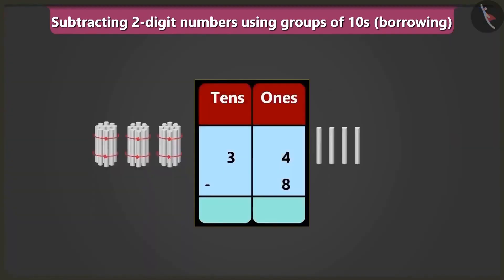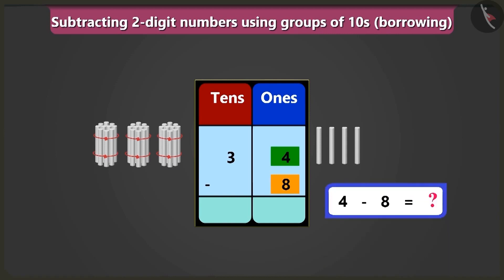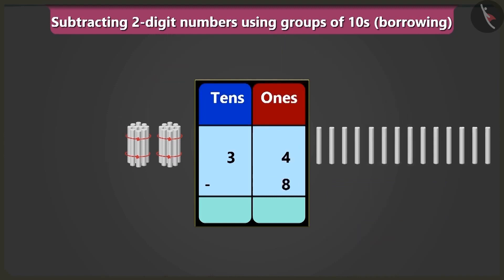To subtract 8 from 34, we write 34 and 8 in the box of ones and tens. 34 means 3 tens and 4 ones, and we have 8 ones. Now we subtract 8 from 4 in the box of ones — but 4 is smaller than 8, so we cannot subtract a big number from a small number. We will borrow 1 ten from the box of tens — the number in the ones place can borrow from its neighbour. So we write 14 ones in the box of ones and 2 tens in the box of tens.